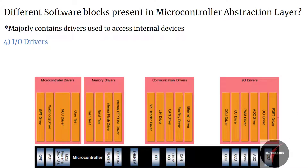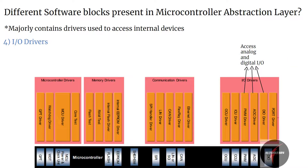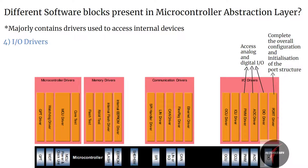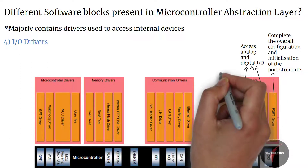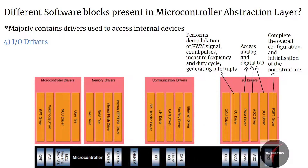IO drivers contain drivers for analog and digital input/output, such as ADC (analog to digital converter), PWM (pulse width modulation), and DIO (digital input output). The port driver module completes the overall configuration and initialization of the port structure used by the DIO driver module; therefore, the DIO driver works on pins and ports configured by the port driver. The ICU (input capture unit) driver performs demodulation of the PWM signal, counts pulses, measures the frequency and duty cycle, and generates simple interrupts and wake-up interrupts.